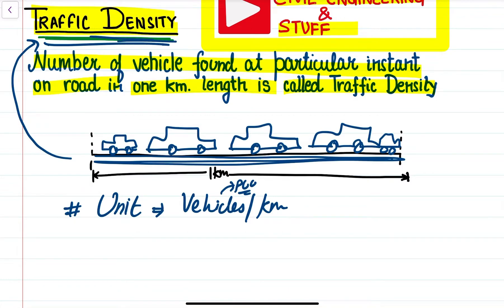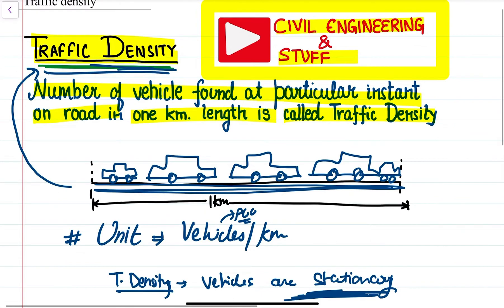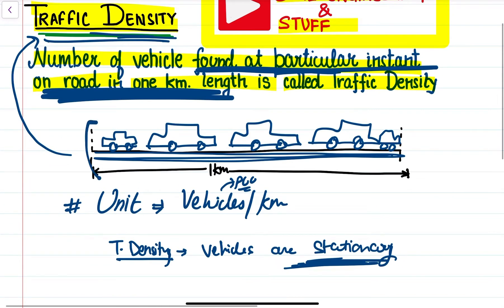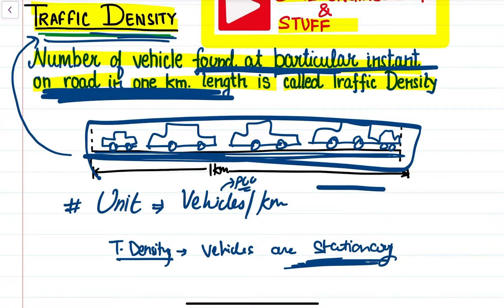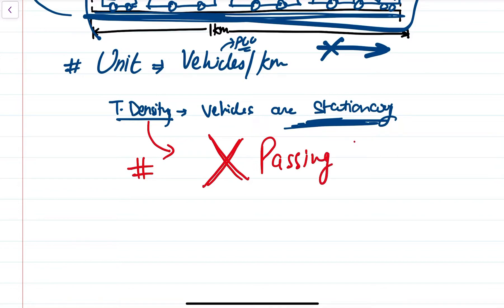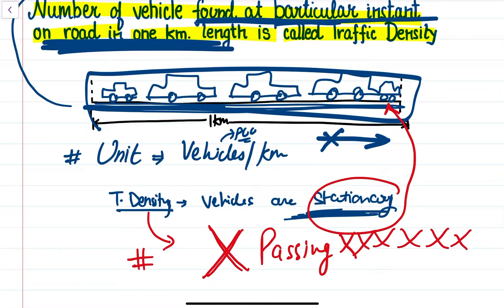One important thing to notice when comparing traffic volume, traffic capacity, and traffic density is that in traffic density, the vehicles are stationary. If you look at the definition again, the vehicles are occupying a one kilometer section of the road at a particular instant — we are looking at stationary occupancy. We are not looking at the number of vehicles that are passing the one kilometer section of the road.